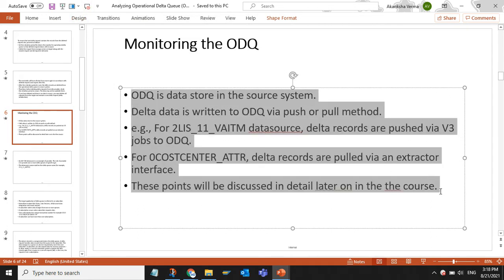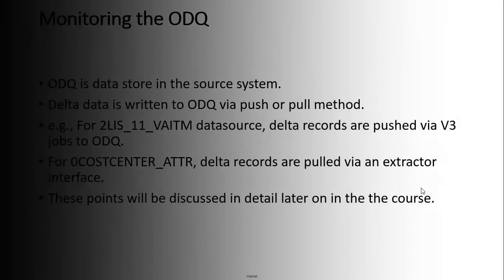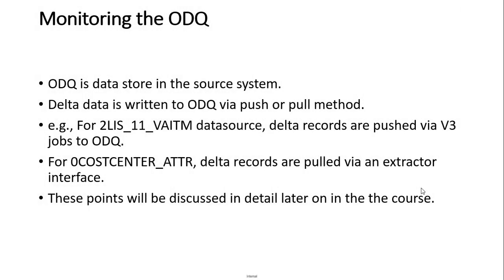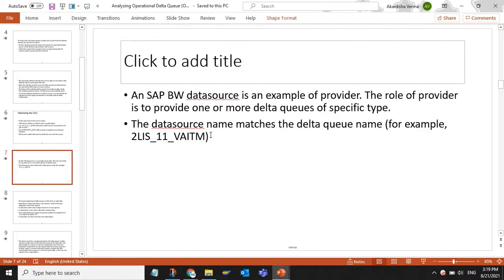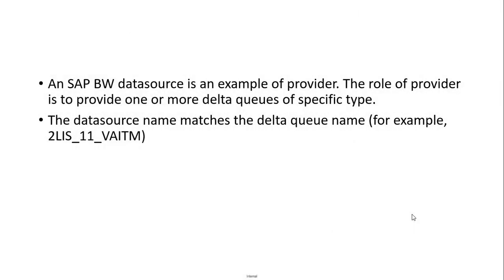Monitoring the ODQ. ODQ is a data store in the source system. Delta data is written to ODQ via a push or pull method. For example, for the 2LIS-11-VATN data source, delta records are pushed via V3 jobs to ODQ. For 0CostCenter-ATTR, delta records are pulled via an extractor interface. These points will be discussed in detail later in the course. An SAP BW data source is an example of a provider. The role of the provider is to provide one or more delta queues of a specific type. The data source name matches the delta queue name, for example, 2LIS-11-VATN.